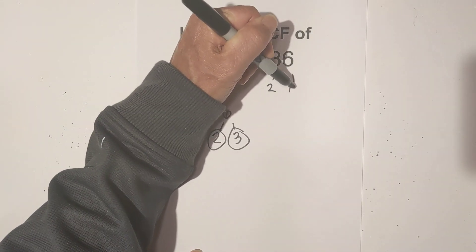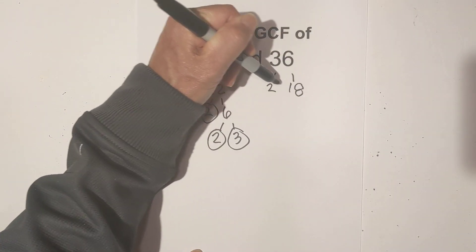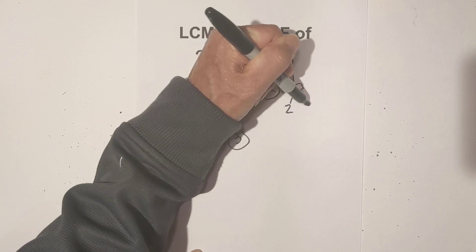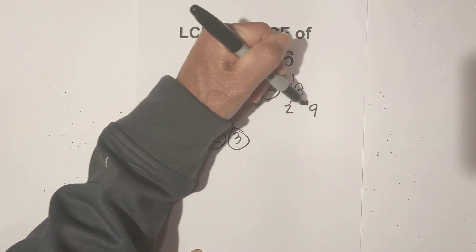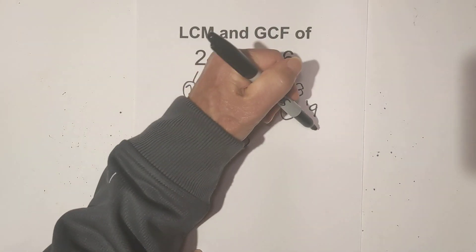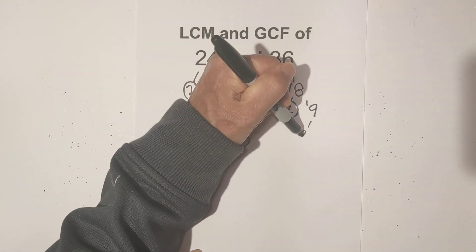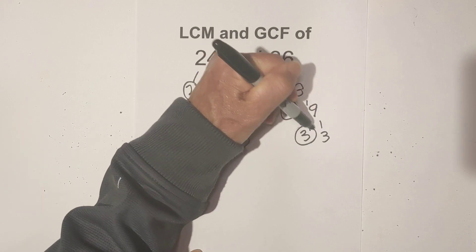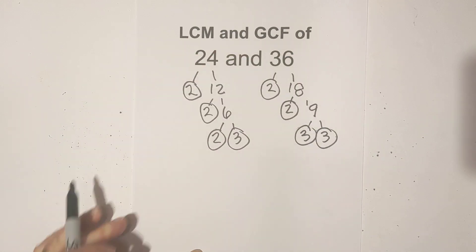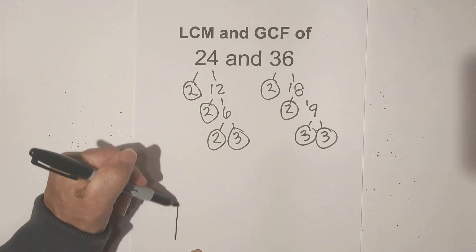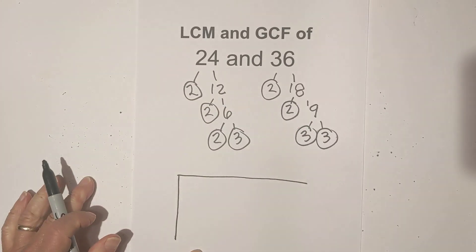Now 2 times 18 equals 36. 2 times 9 equals 18, and now 3 times 3 equals 9.